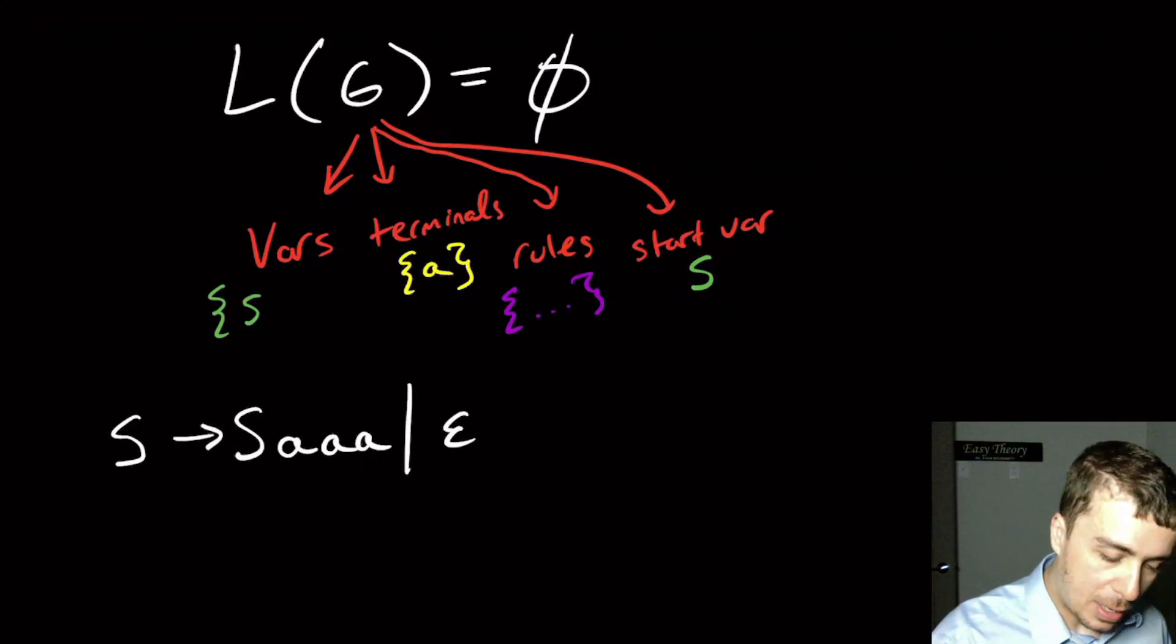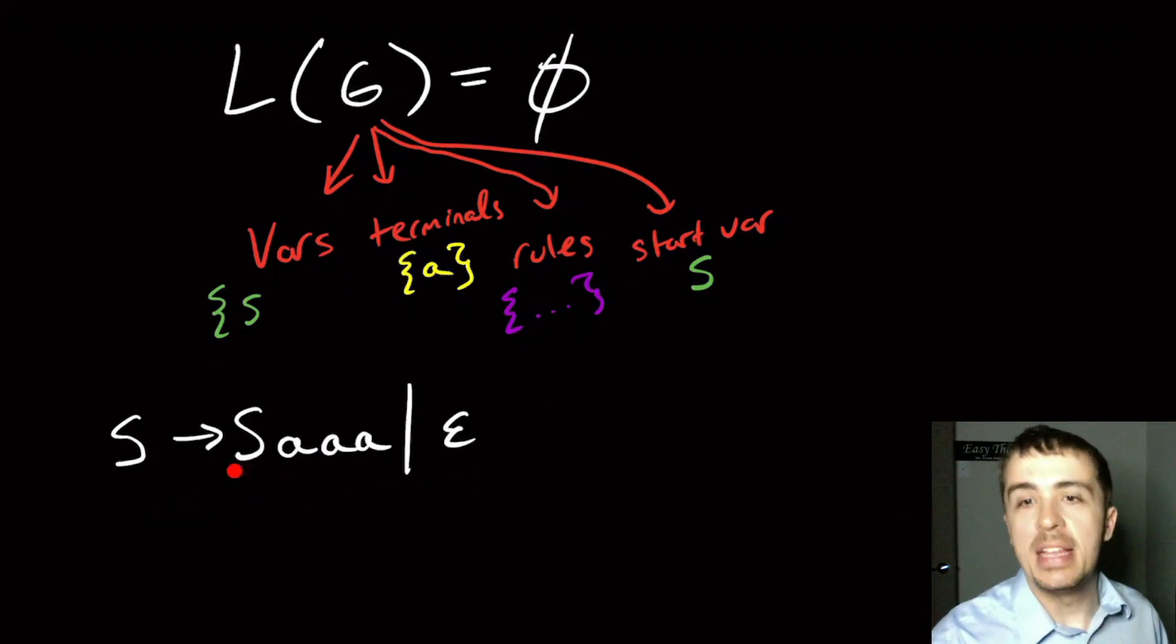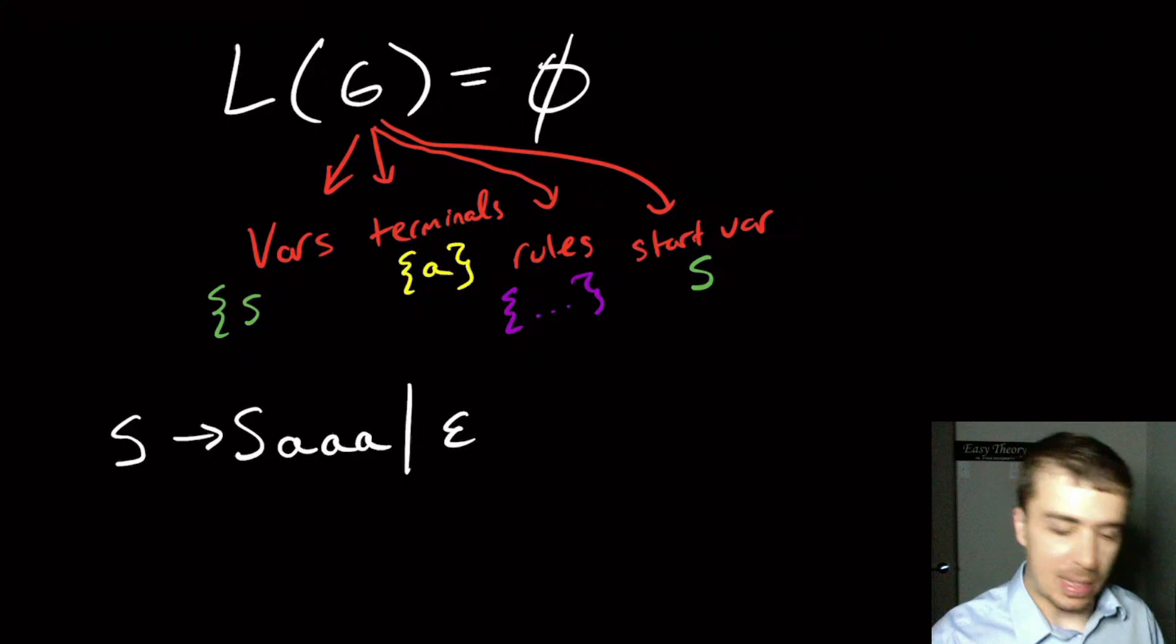If I added a rule like S goes to epsilon also, then this grammar can make something. Because eventually, I can make the S go away like this.